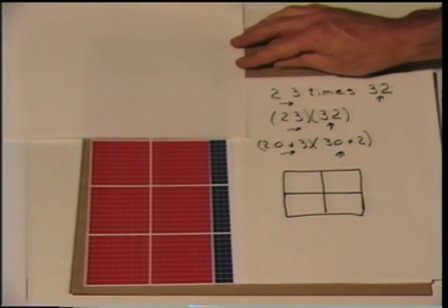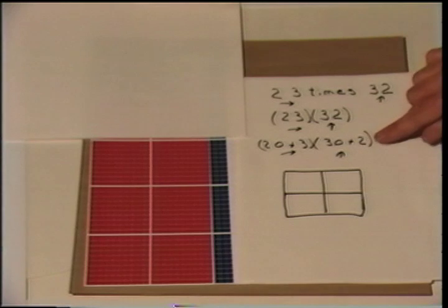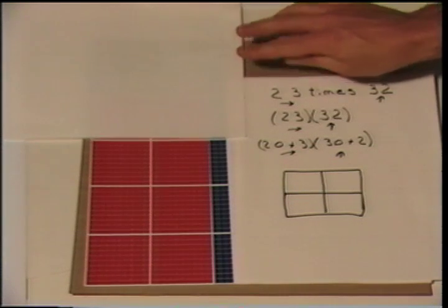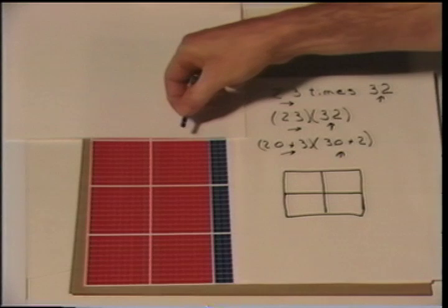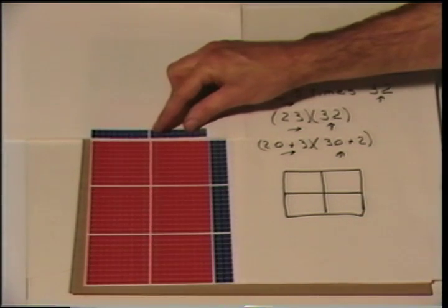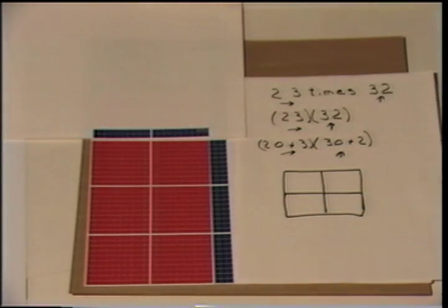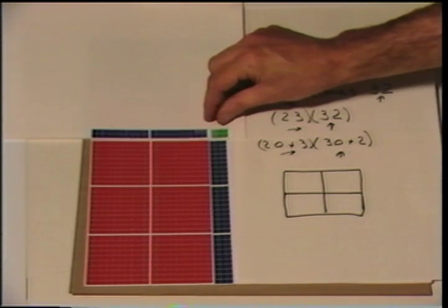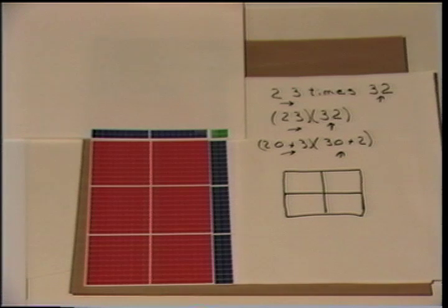Then I must move up 2 more units — not 2 more bars of 10, but 2 more units. Here we can see how much more I must move up. Now I need to fill in the corner. I fill in the corner, and I multiplied. Multiplication is building a rectangle so I can find its other name.